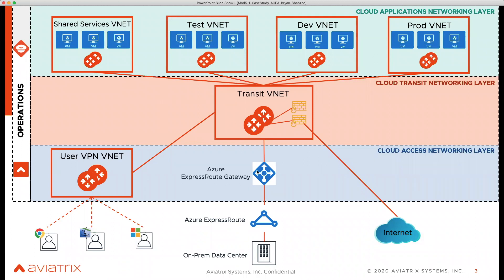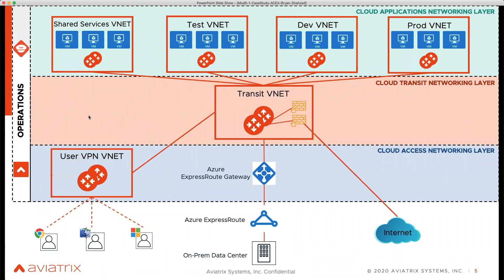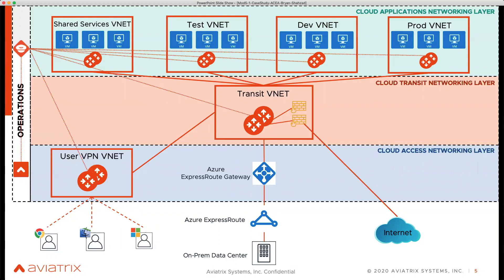All the interaction is done through the controller — it programs routes, creates security policies, and ensures intent is properly applied. This can be done via API or Terraform, and the majority of enterprise customers use Terraform to manage interactions. Beyond that, they need extreme visibility, so they can extend the platform with CoPilot, which correlates NetFlow data from the gateways — they call it FlowIQ, combining NetFlow with other services — to provide comprehensive network visibility. That's how Aviatrix solves these problems for customers like this.